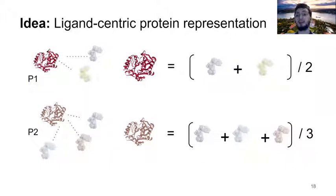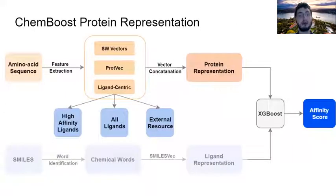To do so, we develop a method called ligand-centric protein representation. In the ligand-centric protein representation, we represent each protein with its known ligands. And to represent a protein with its ligands, we simply compute the SMILESvec representations of the ligands, and then take their average to obtain a ligand-centric protein vector. This vector encodes the functional information of a protein directly because it uses its interacting ligands. We also develop some variations of these methods where we use only high affinity ligands to represent the proteins or all of its ligands, or integrating an external resource to enrich the non-high affinity ligands.